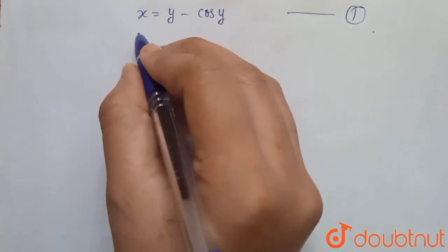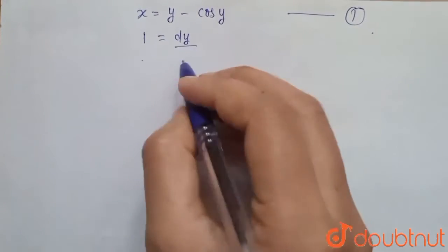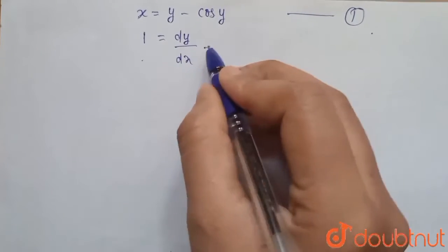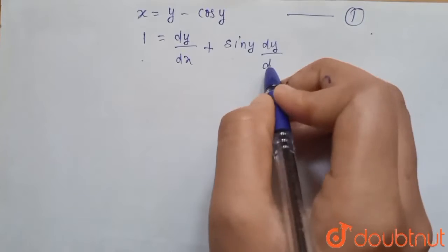So when we differentiate this with respect to x, we get 1 equal to dy upon dx minus minus plus sin y dy upon dx.